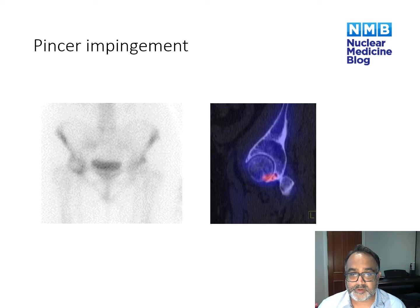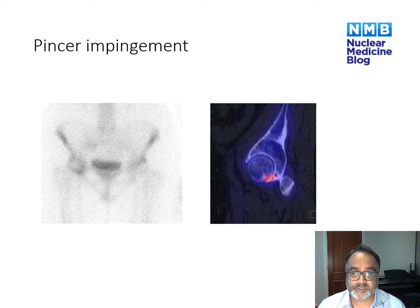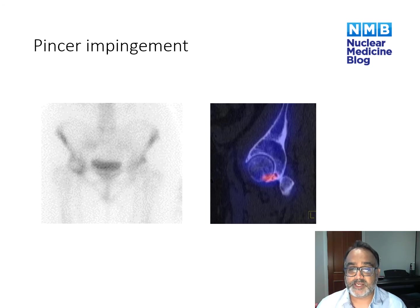The other type of femoral acetabular impingement is pincer impingement, which occurs with over-coverage of the femoral head. Osteophytes arising from the margins of the acetabulum overgrow around the femoral neck, resulting in a pincer-type impingement. On the planar image, you can see subtle low-grade uptake around the acetabulum. The SPECT CT image shows very focal increased uptake posteriorly with associated subarticular cysts on the CT component.